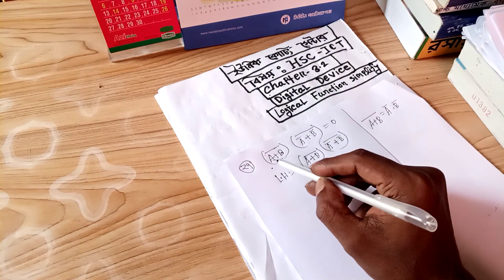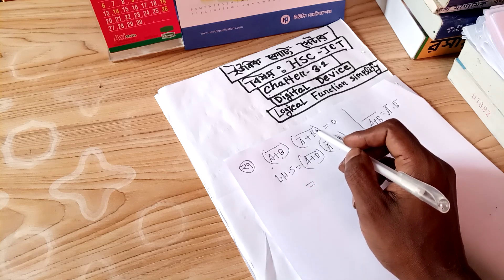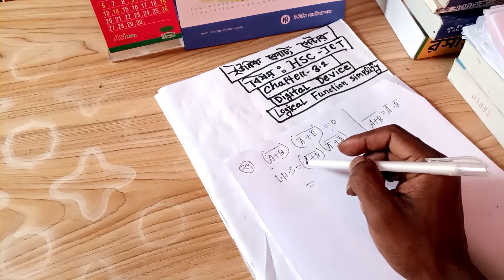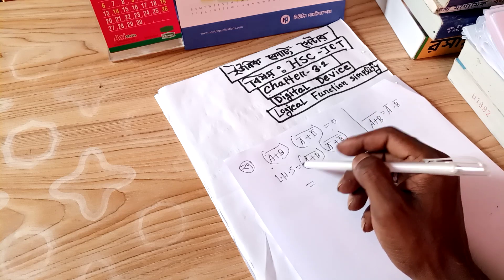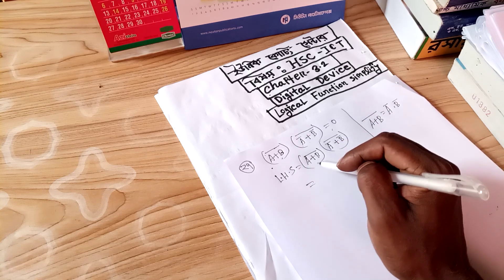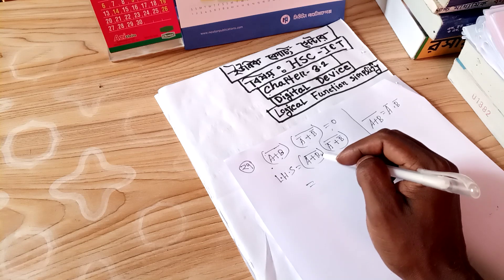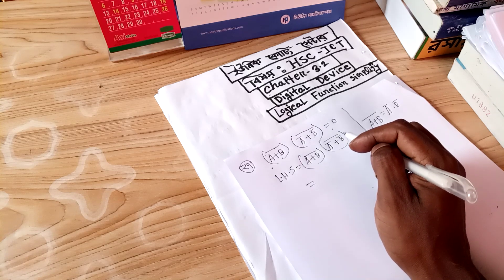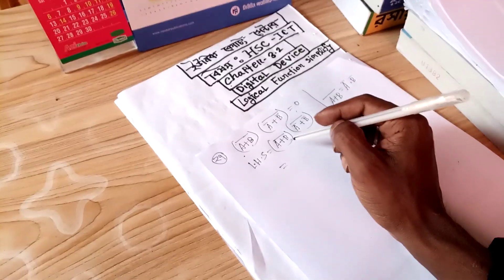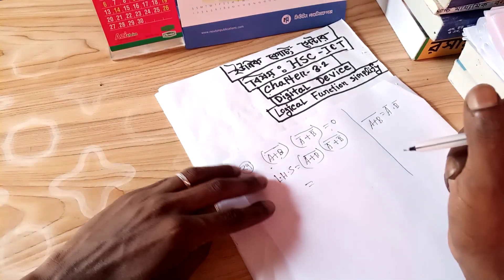A plus V̄ into Ā plus V̄ equals to 0. In this text, I will click on the left side. The second one — I'll call the wrong one on the left side. A plus V̄ into Ā plus V̄. The second one is De Morgan's theorem.